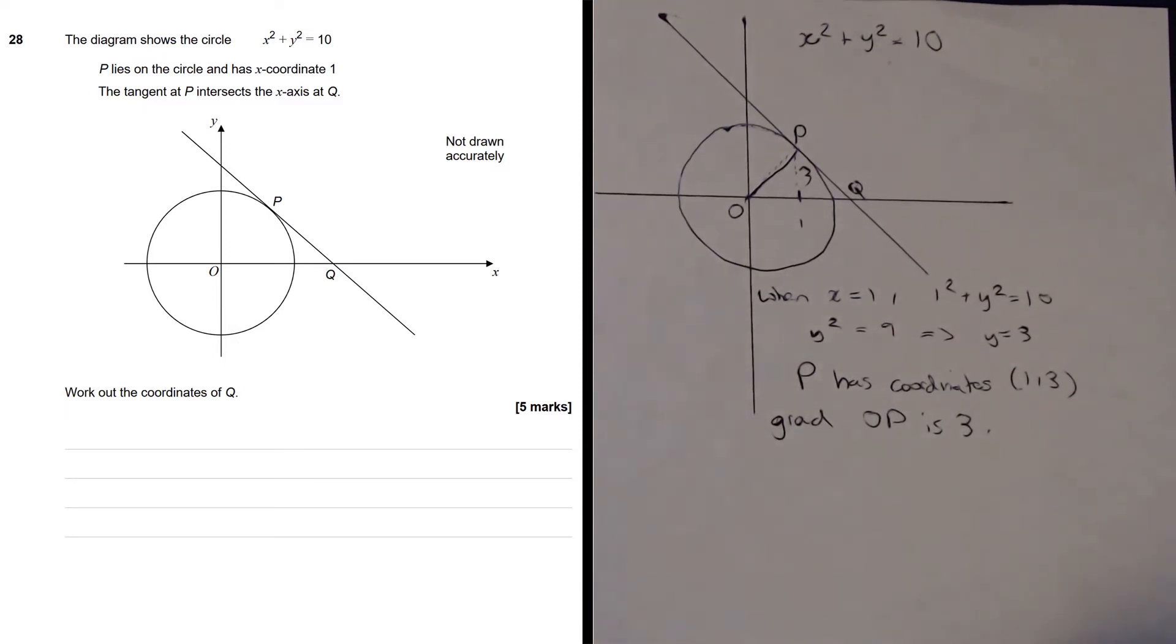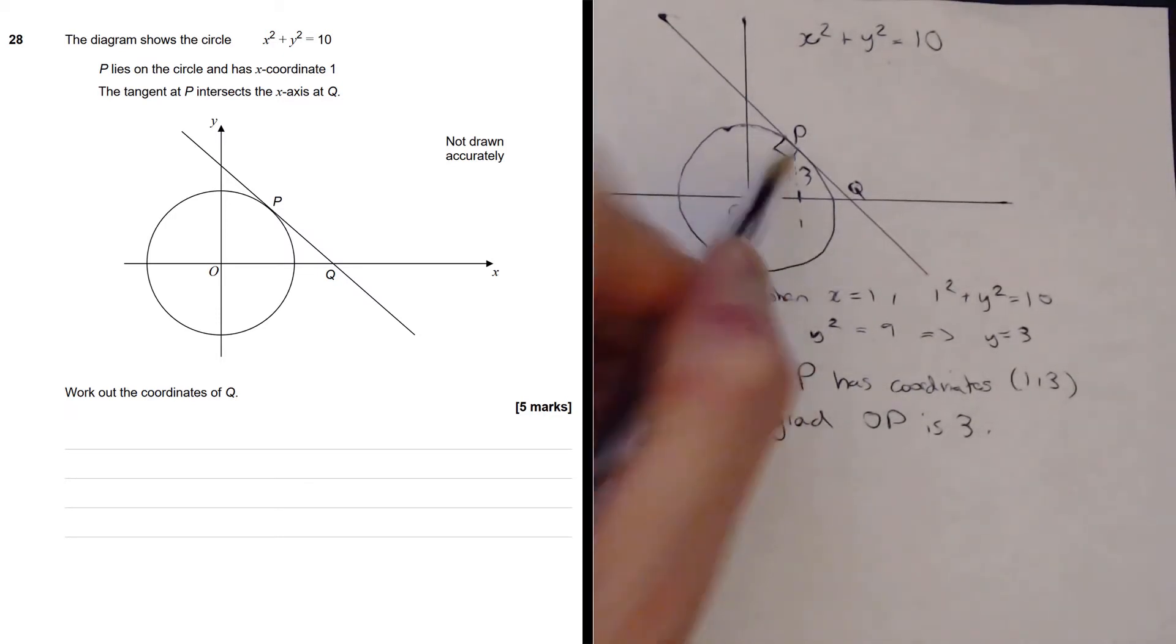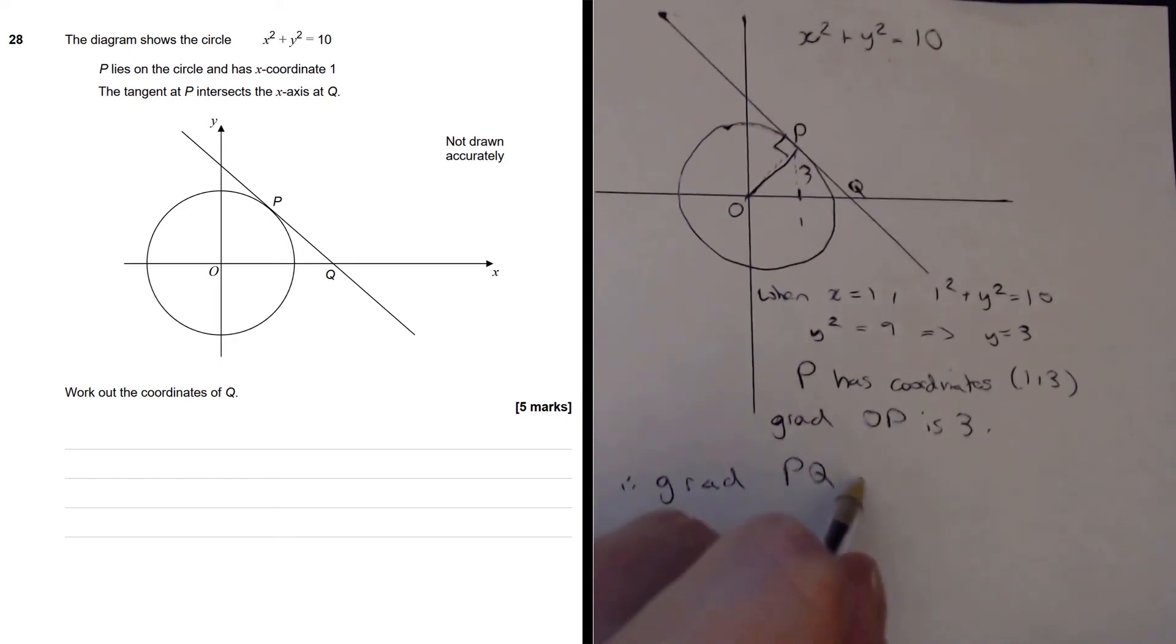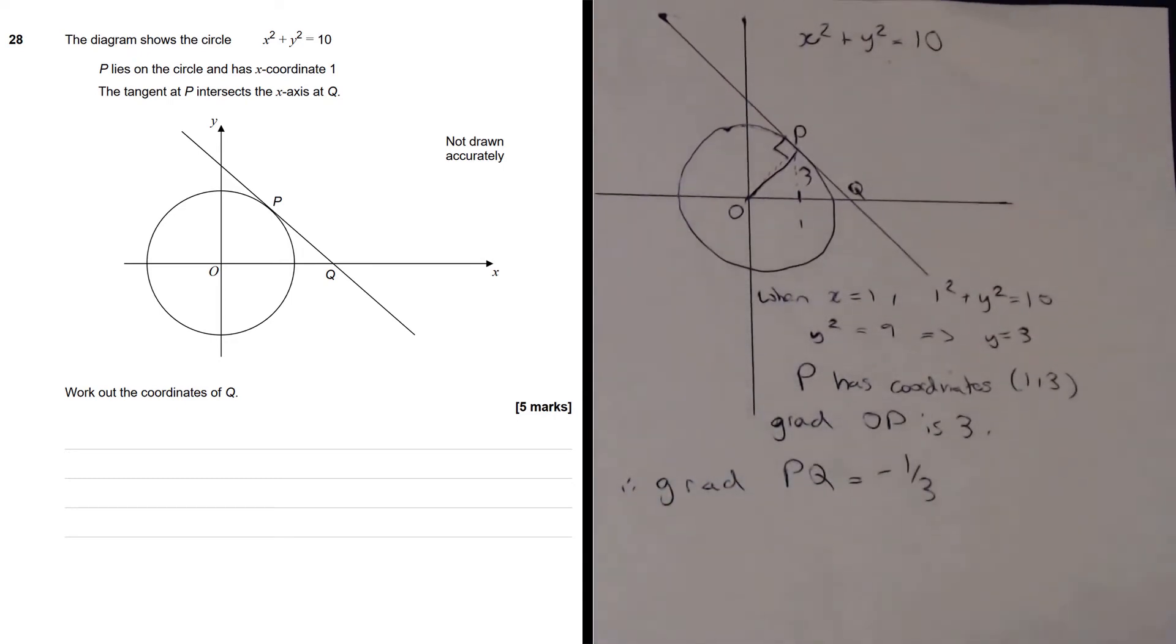That means though, that the gradient of PQ, this line here, is the negative reciprocal of 3. Why? Because they are perpendicular. This is tangent to the circle, and the line I've drawn there is perpendicular at that point. And we know that the gradient of perpendicular lines are the negative reciprocals of each other. So therefore, the gradient of PQ is negative 1/3.